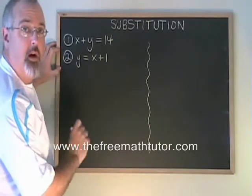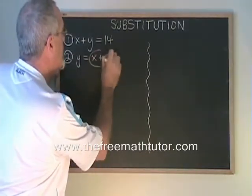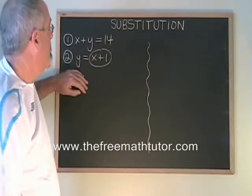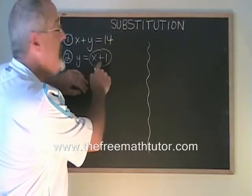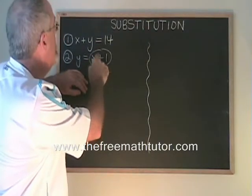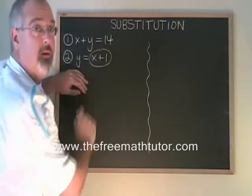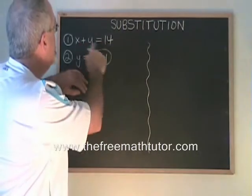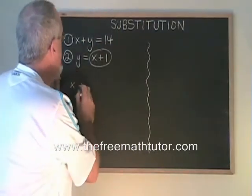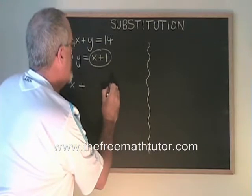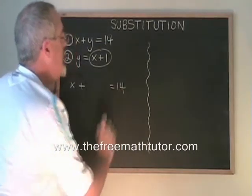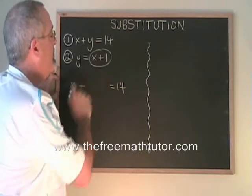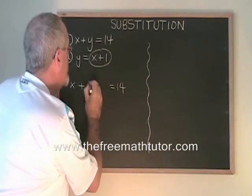We know y is equal to this. The logic of substitution is that if y is equal to this in one equation, the y in the other equation is also equal to this. So we can rewrite the first equation, x plus y equals 14, except instead of the y, we leave a space and we put x plus 1 into that space.